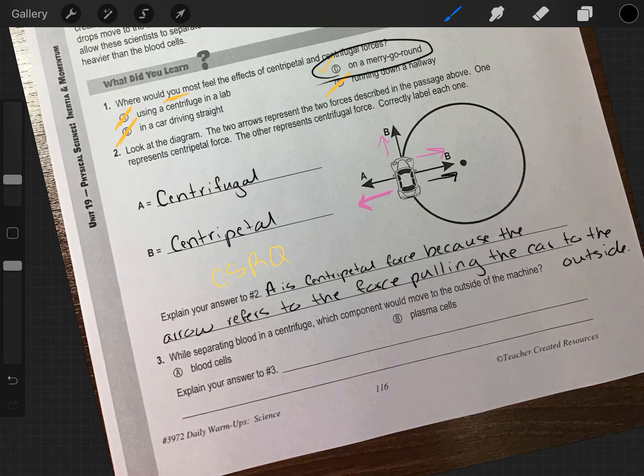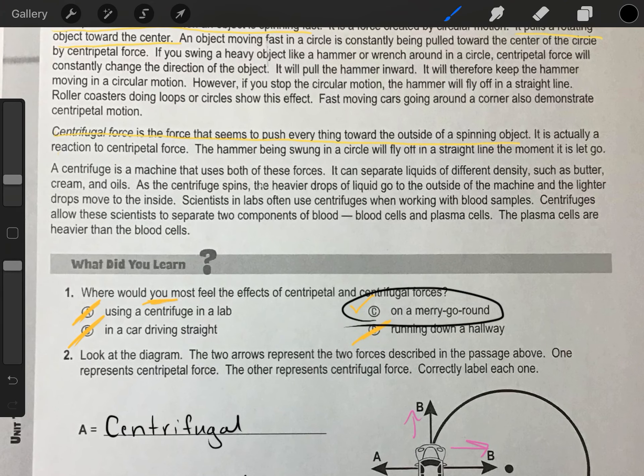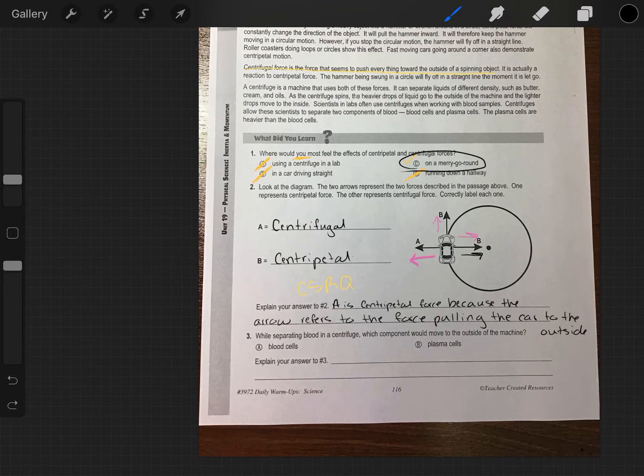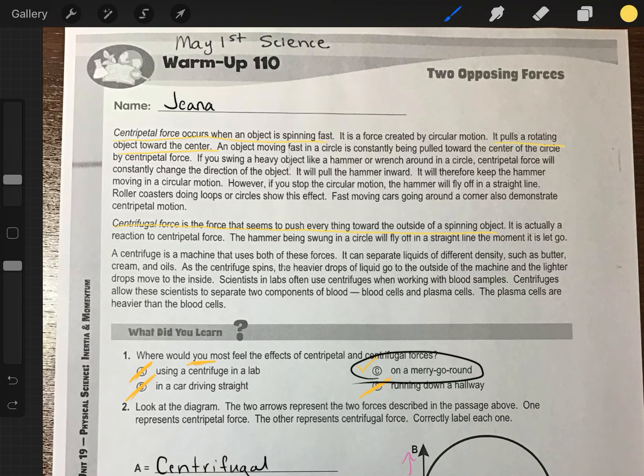While separating blood in a centrifuge, which component would move to the outside of the machine? A, blood cells, or B, plasma cells? Okay. So the question I asked you is a little bit difficult. Let's go back to our passage. As the centrifuge spins, the heavier drops of liquid go to the outside of the machine, and the lighter drops go to the inside. The plasma cells are heavier than the blood cells.